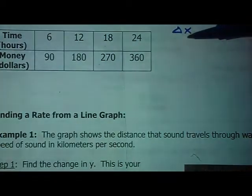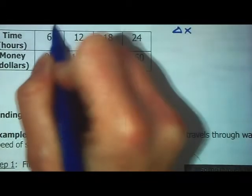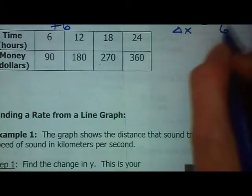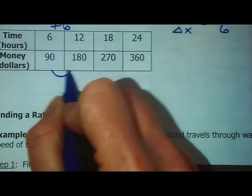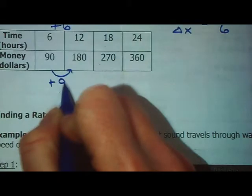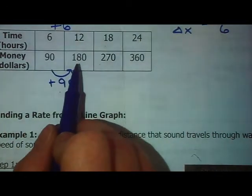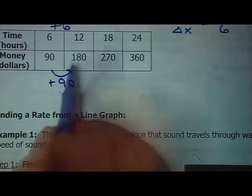The money is the dollars—that's my y. The time is hours—that's my x. It's dollars per hour, so it's y over x. As you can see, with the time it's going up by six every single time. The dollars is going up by 90 every single time.